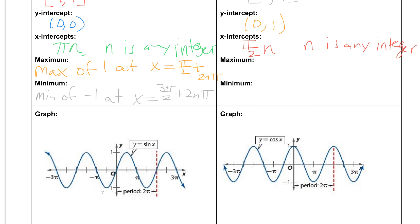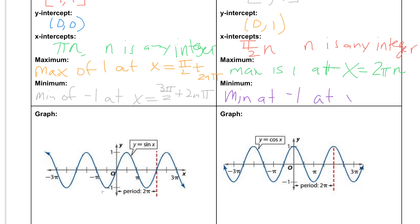When we look at our maximum value, it's going to be the same as our sine function in that the maximum is still 1 and the minimum is still negative 1, but they happen at different places. Our maximum for cosine is 1 at x equals 2πn, and our minimum value of negative 1 occurs at x equals π plus 2πn, where n is any integer.